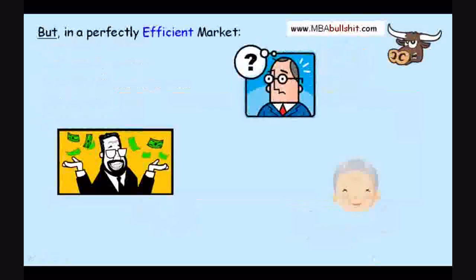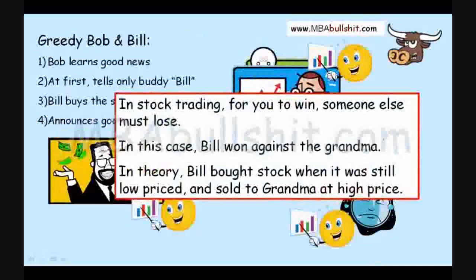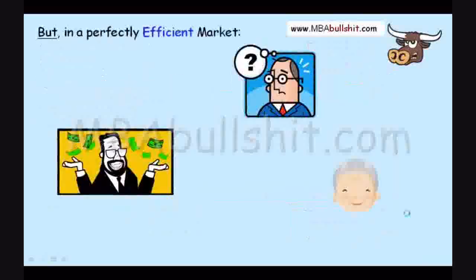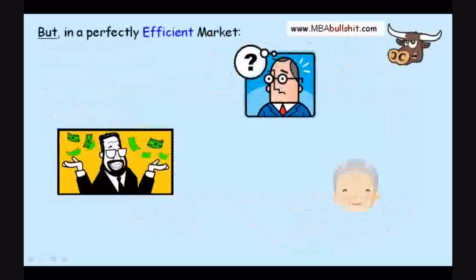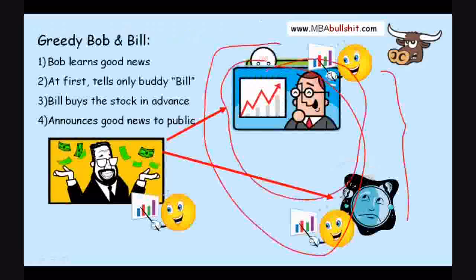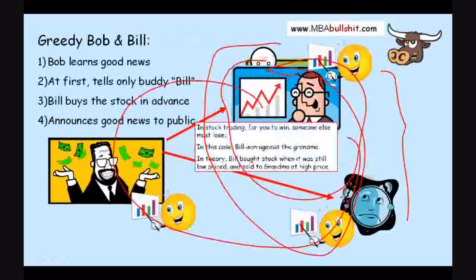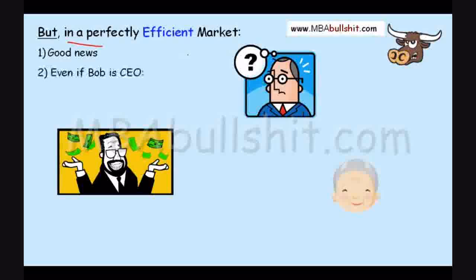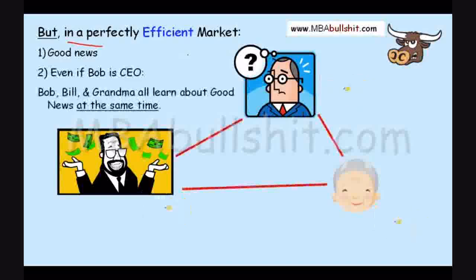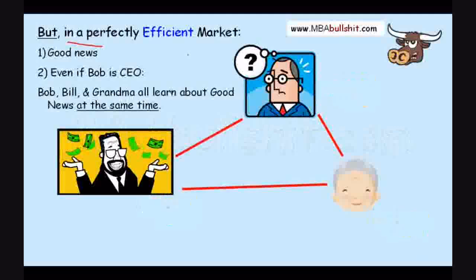However, this is actually what happens in real life — but this does not happen in what we call an efficient market. We saw this bad situation, but in a perfectly efficient market, that would not happen. This bad situation between Bill, Bob, and grandma would not happen in a perfectly efficient market. Why? Because in a perfectly efficient market, there is good news, and even if Bob is the CEO, Bob, Bill, and grandma all learn about the good news at the same time — even if Bob is CEO — in a perfectly efficient market.